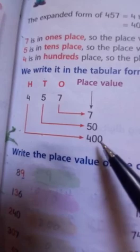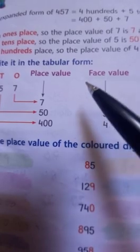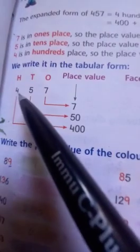Now, what is face value? Bitta, face value is the digit itself. Jo hi digit hai, wohi uska face value hai. Now, what is the face value of seven? It is only seven. What is the face value of five? It is five. And what is the face value of four? It is only four.